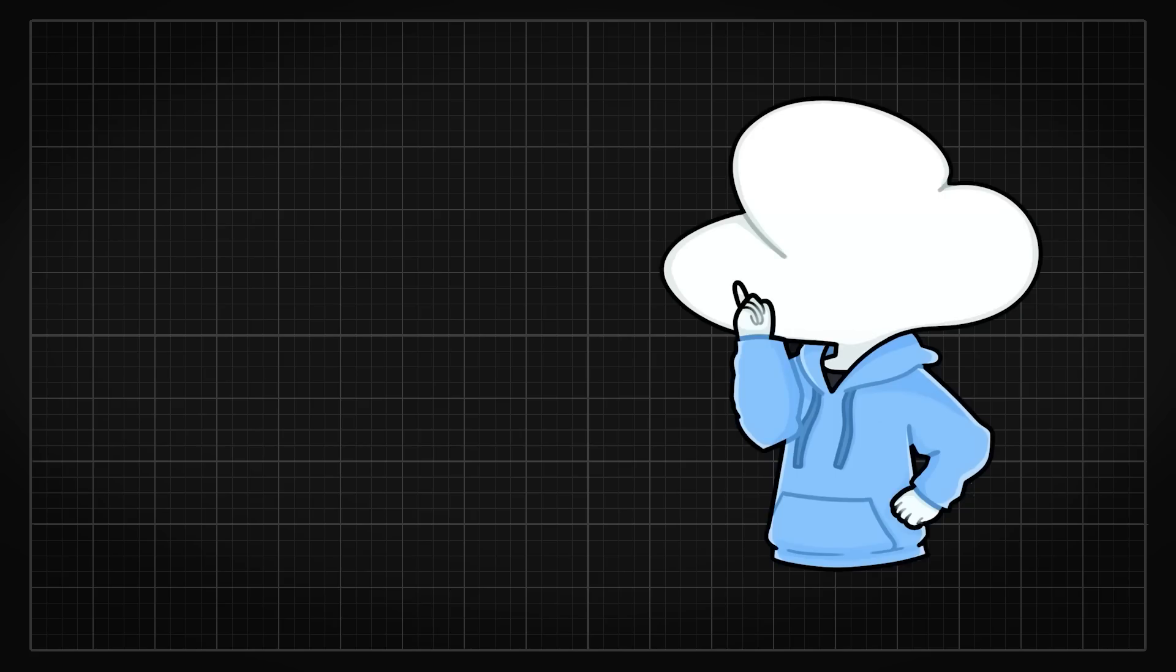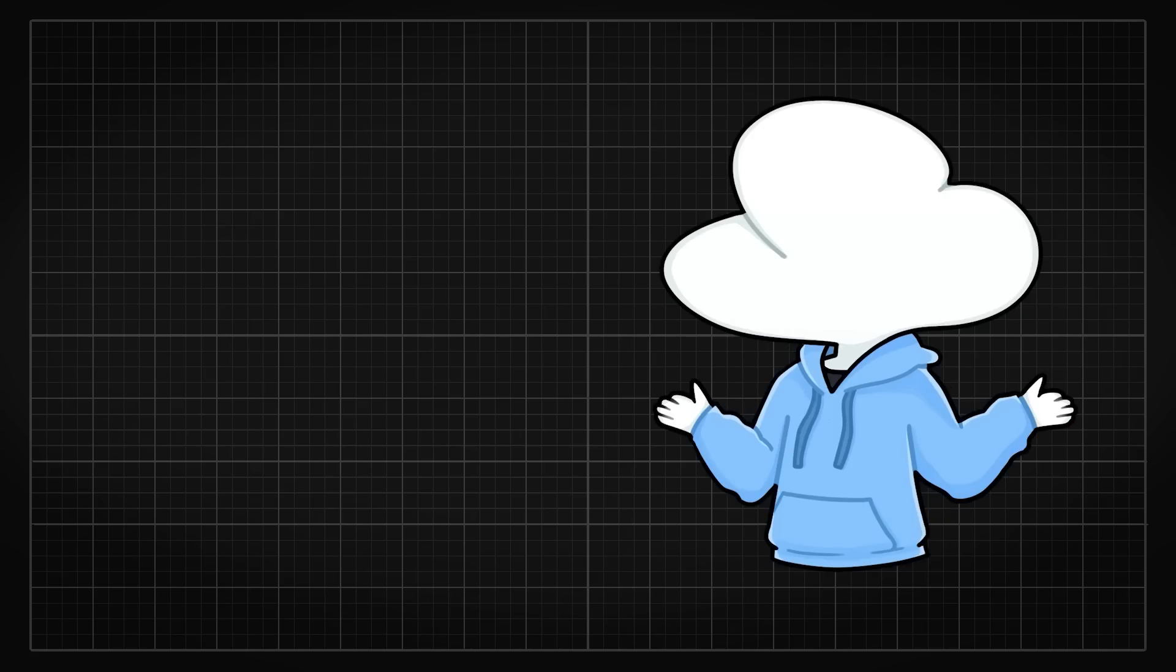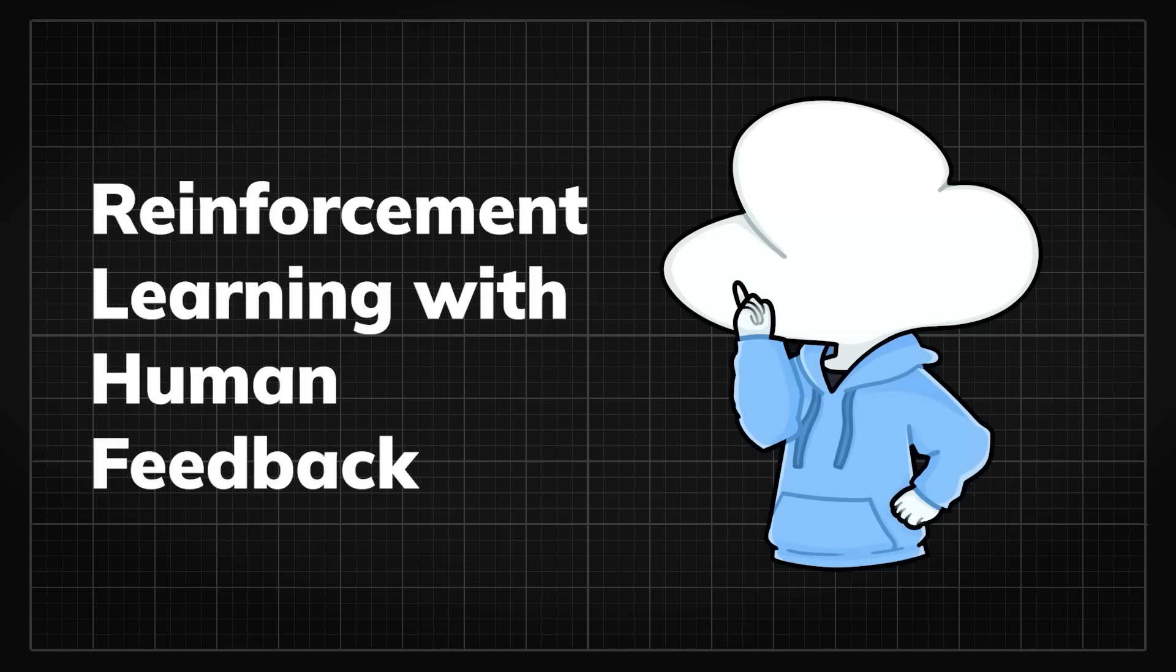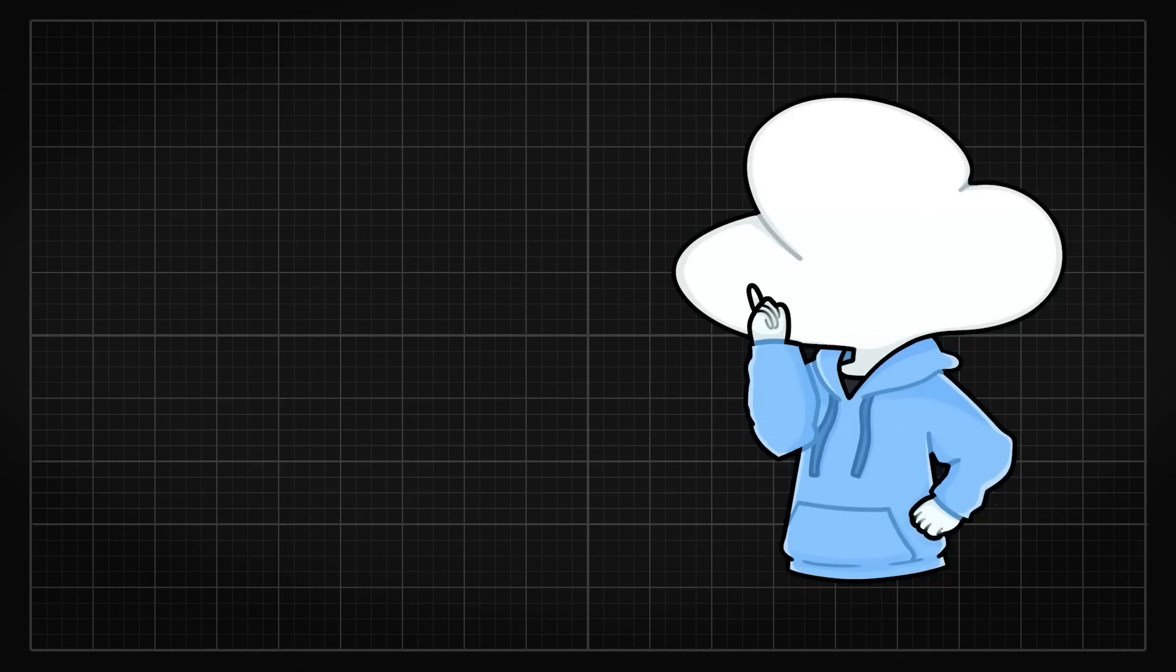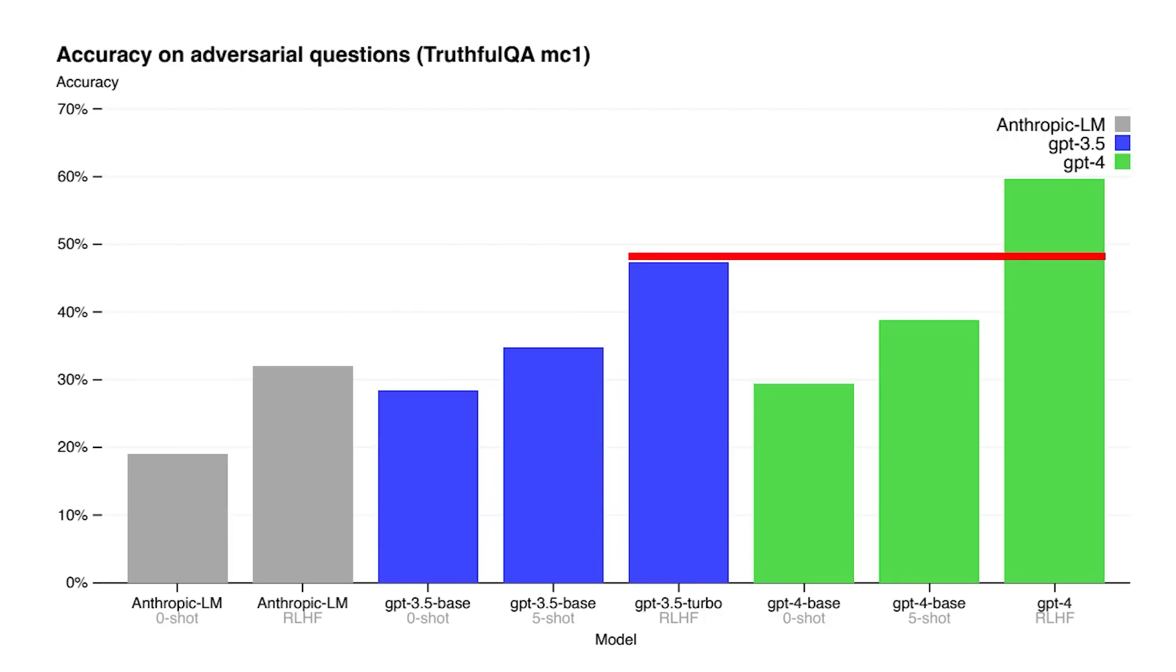This incredible increase in performance is likely achieved through improvements in RLHF, which stands for reinforcement learning with human feedback. As you may have seen from the Shoggoth language model meme, RLHF has helped GPT-4 improve its steerability and alignment by around 12% compared to GPT-3.5 with RLHF. This is really interesting because GPT-4's base performance in terms of steerability is the same as that of GPT-3.5's base performance on this truthful Q&A benchmark.